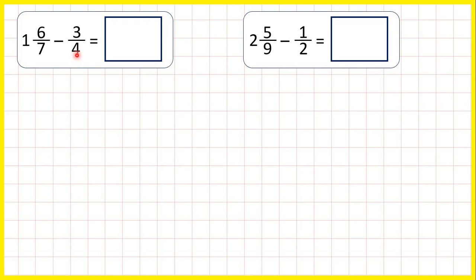Now we're subtracting a fraction from a mixed number, and when we're subtracting we need the denominators to be the same. So 28 is in both the 7 and the 4 times table, so we can find equivalent fractions to 6 7ths and 3 quarters which have a denominator of 28.